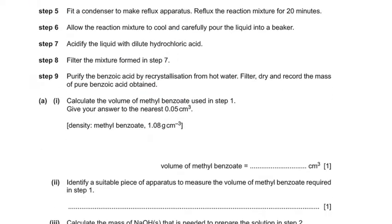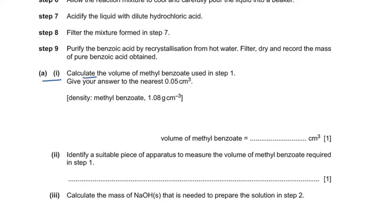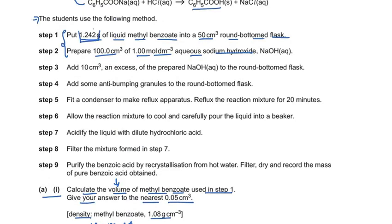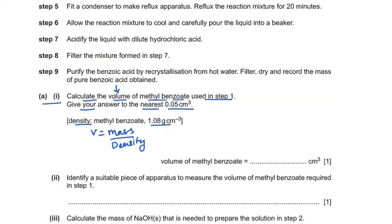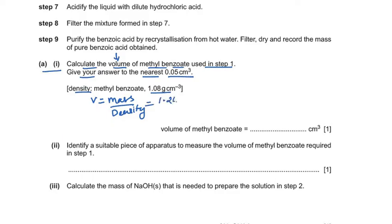Question 1a asks us to calculate the volume of methyl benzoate used in step 1, giving the answer to the nearest 0.05 cm³. The density of methyl benzoate is given. Volume = mass ÷ density, so 1.242 g ÷ 1.08 g/cm³ = 1.15 cm³. The volume of methyl benzoate is 1.15 cm³.